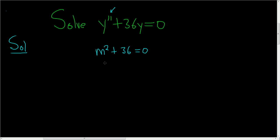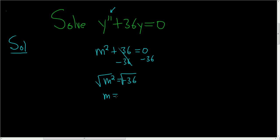Then we solve this equation for m, so we'll subtract 36 from both sides. We end up with m squared equals negative 36. Taking the square root of both sides gives us m equals plus or minus 6i. In this case, our roots are complex conjugates.